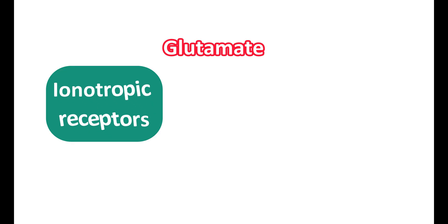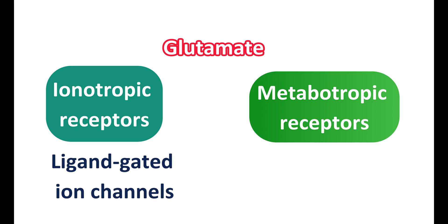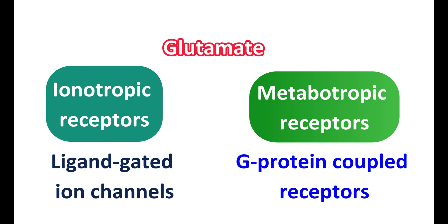Glutamate produces its excitatory functions by acting on glutamate receptors. These receptors are classified into two types based on how they function: ionotropic receptors and metabotropic receptors. Ionotropic receptors are also called ligand-gated ion channels — they are coupled with ion channels that open when glutamate binds. Metabotropic receptors are also called G protein-coupled receptors.